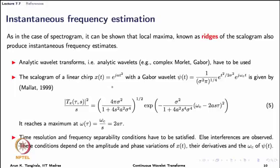To give you an example borrowed from Stéphane Mallat's book: we compute the scalogram of a linear chirp using a Gabor wavelet. A Gabor wavelet is essentially a Morlet wavelet. The expression for the normalized scalogram is given here, and as you can see, the normalized scalogram reaches a maximum at omega of tau, which is 2 times a times tau.